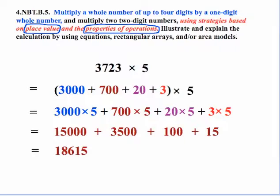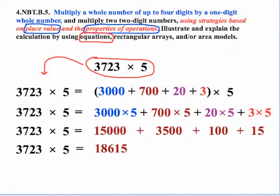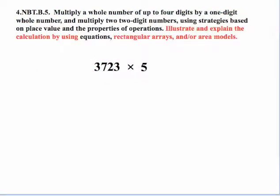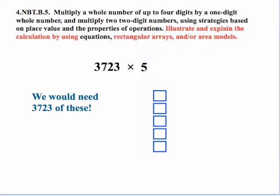Now we took sort of a shortcut in that example. What we were really doing, we also were using equations because the 3,723 times 5 is actually what would go on the left-hand side of the work that we did. Now this last statement deals with illustrating and explaining the calculation by using equations, rectangular arrays, and area models. We have a little bit of a problem here because 3,723 can be thought of as 3,723 sets of 5. So we would need 3,723 of these and that would be very tough to actually do physically. So there are some limitations to using physical representations when we're dealing with such large numbers.